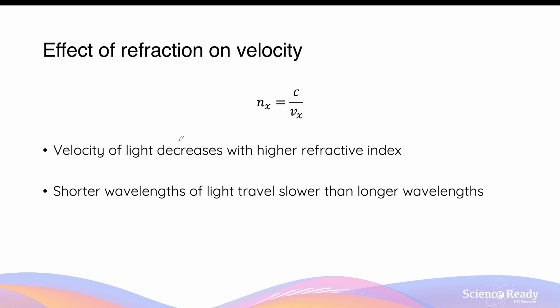Refraction not only changes the direction of travel but also the actual speed or velocity of light. Although all components of white light change in velocity as they undergo dispersion, the shorter wavelengths such as blue or violet will travel slower because they are affected more by refraction compared to longer wavelengths such as orange and red. This means the different colored components of light will be traveling at different velocities in the new medium.